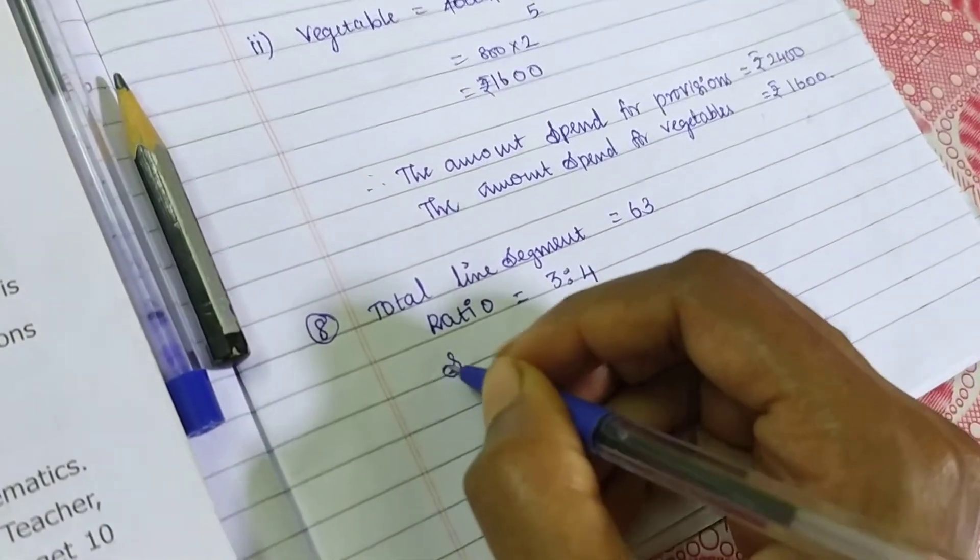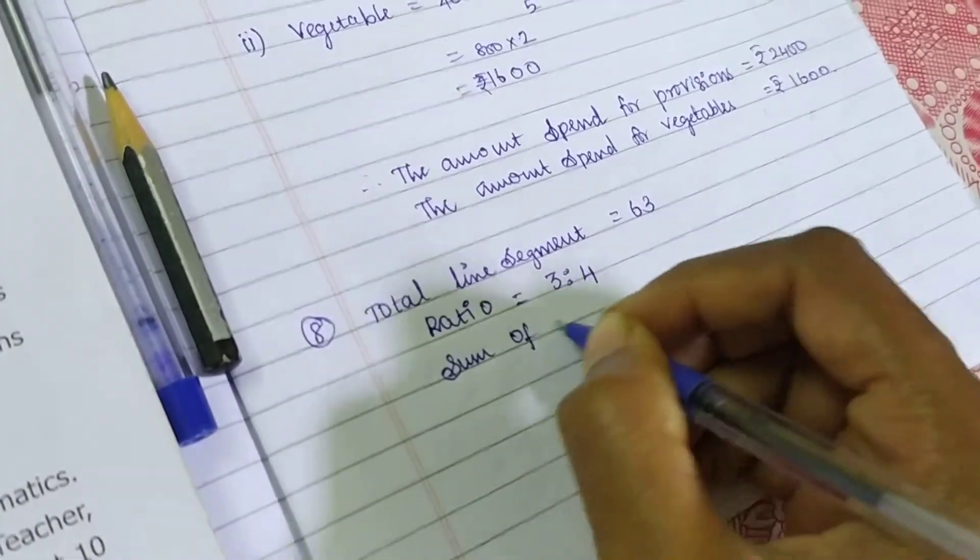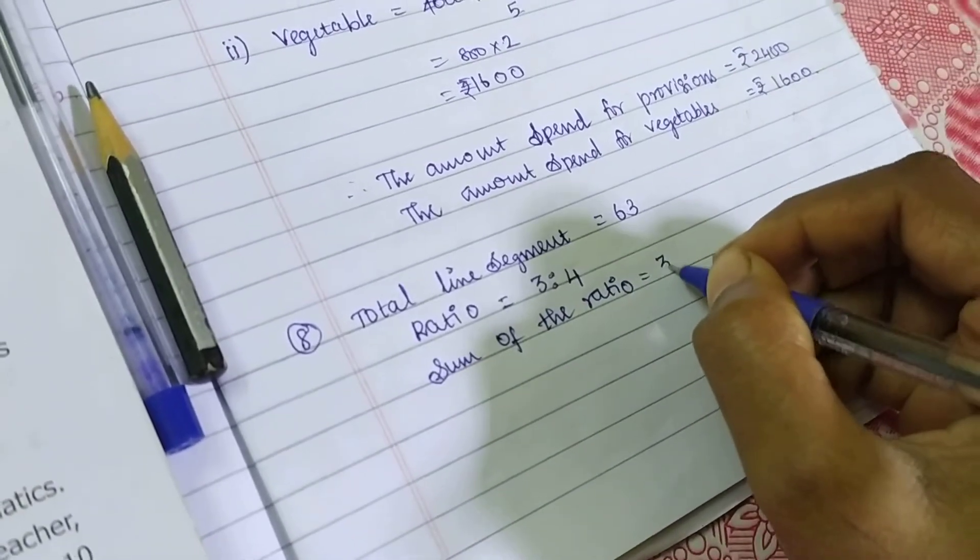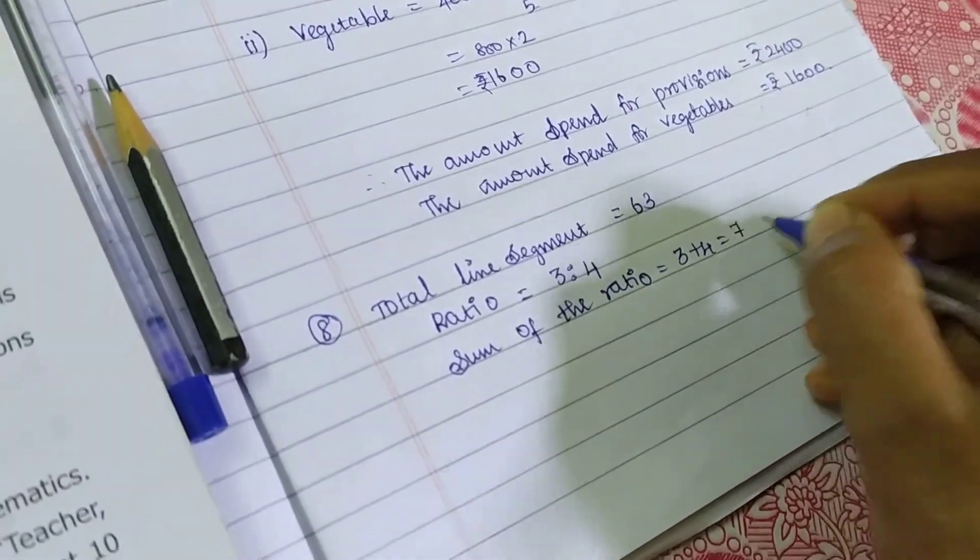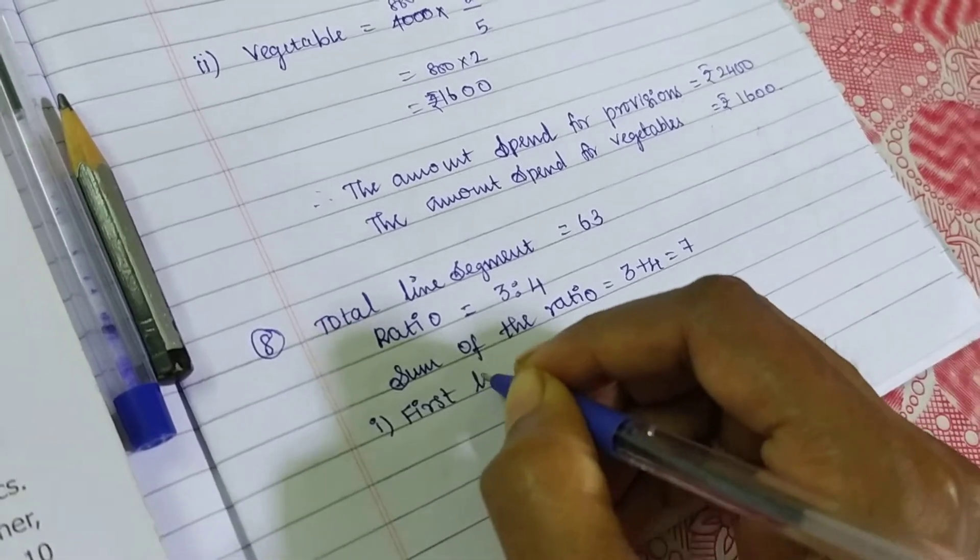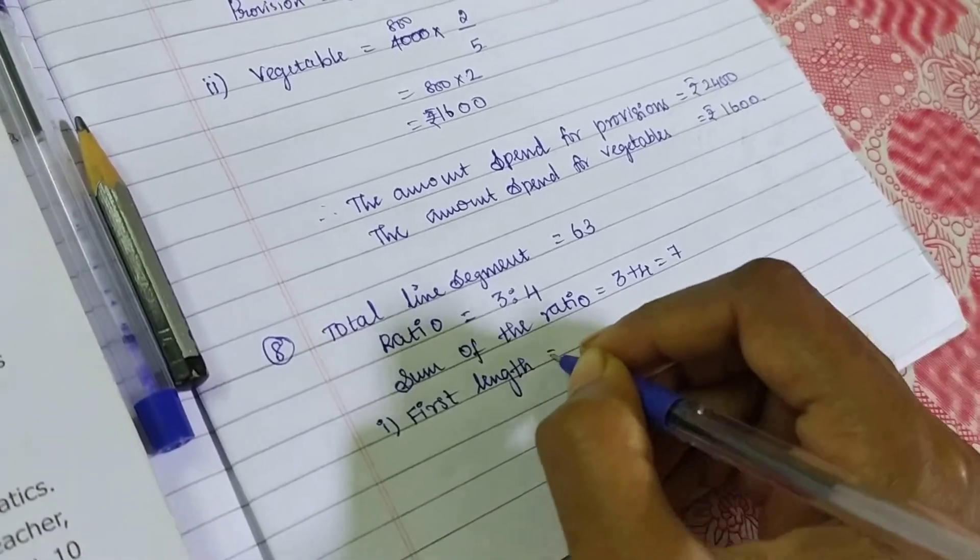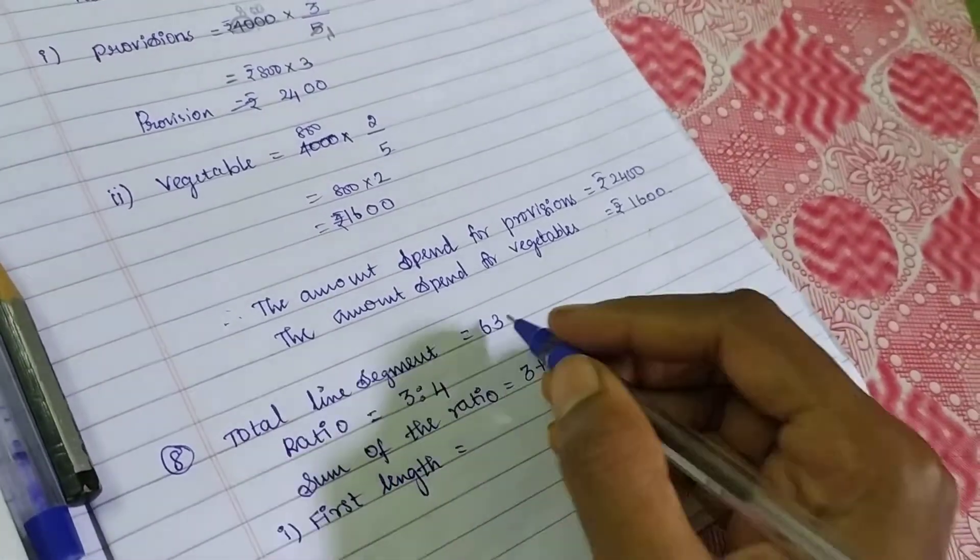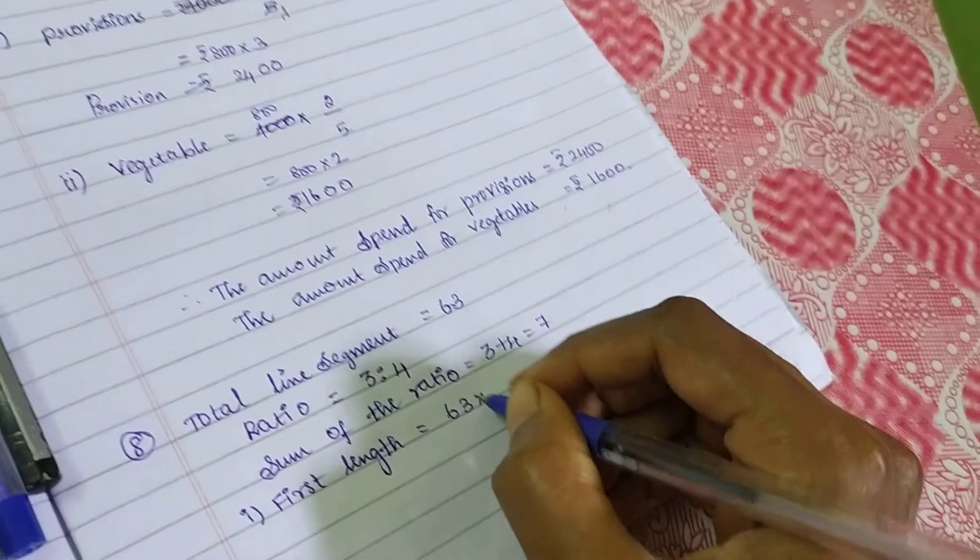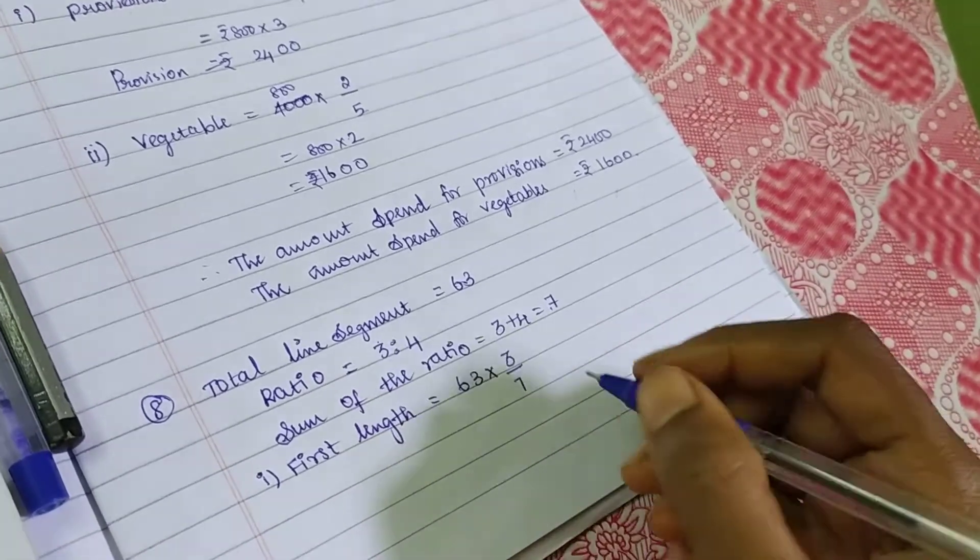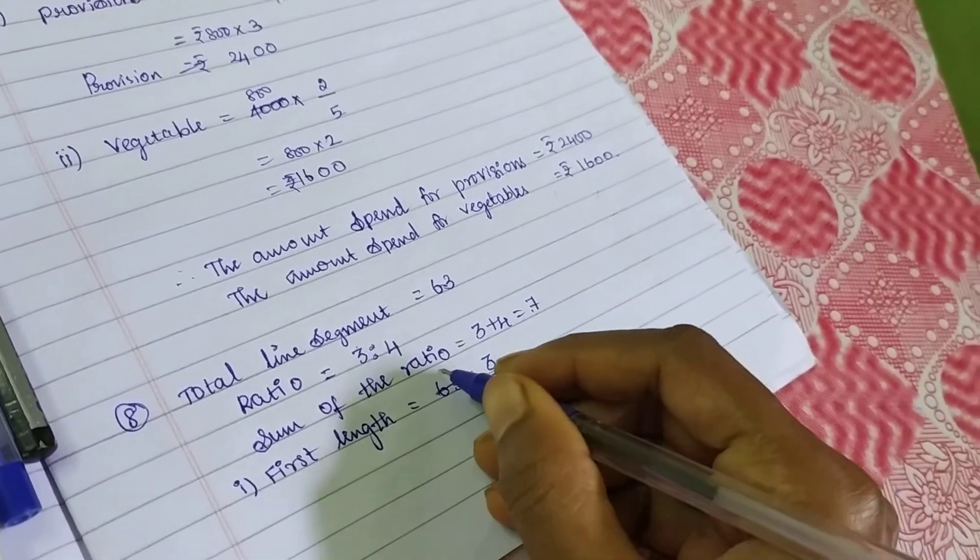So ratio is equal to 3 is to 4. What is the sum of the ratio? 3 plus 4 is equal to 7. So what they mention, each of the length. So first length, first ratio. So what you do: total into ratio. So total is 63 into first ratio is 3, divided by sum is 7. So in 7 table, 63 for 9 times.